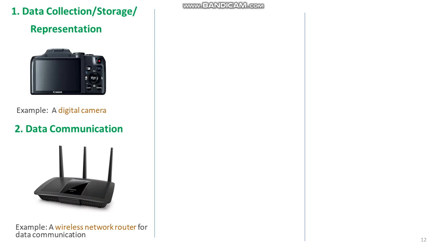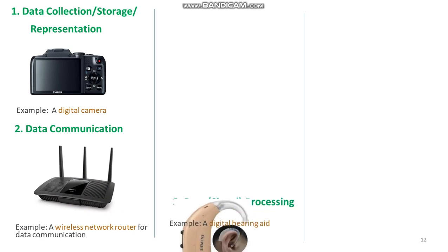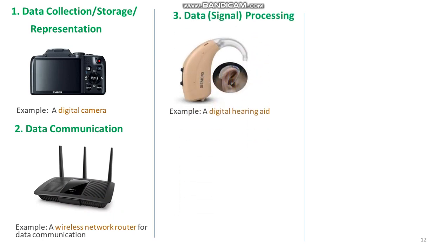Moving on to the next purpose: data or signal processing. The data which is collected by the embedded system may be used for various kinds of data processing. Signal or digital processing is used in speech coding, synthesis, audio-video codec, transmission applications, etc. A digital hearing aid is a typical example of an embedded system employing data processing — it improves the hearing capacity of hearing impaired persons.